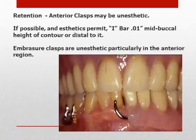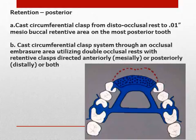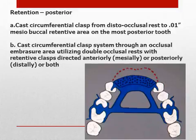When planning anterior tooth retention, recall that clasps may be unaesthetic. If possible and aesthetics permit, the I-bar is used with a 0.01 undercut at the mid-buccal height of contour or distal to it. Embrasure clasps are unaesthetic, particularly in the anterior region. Posterior retention may be provided by a cast circumferential clasp from the disto-occlusal rest to a 0.01 undercut on the mesio-buccal retentive area on the most posterior tooth. Additionally, one may choose an embrasure clasp through an occlusal embrasure area using double occlusal rests, with retentive clasps directed mesially, distally, or both.